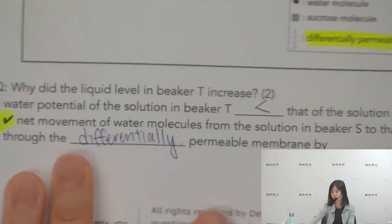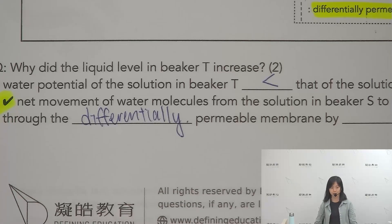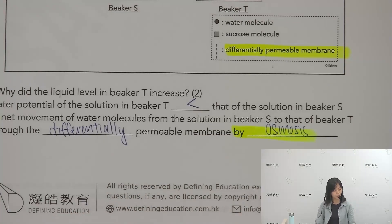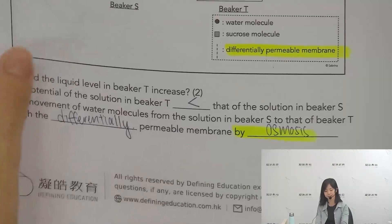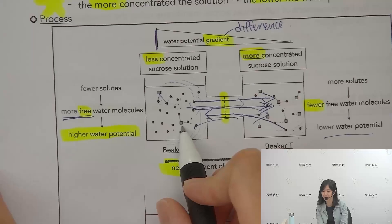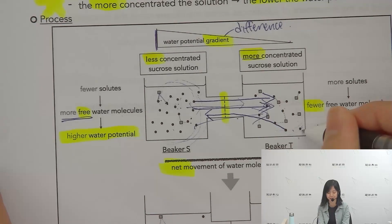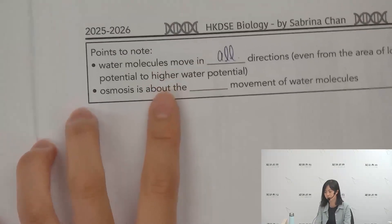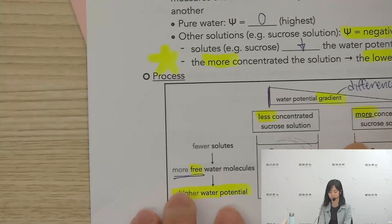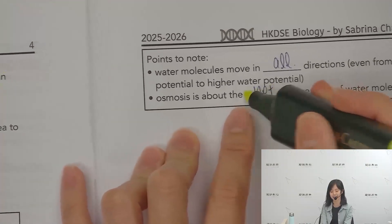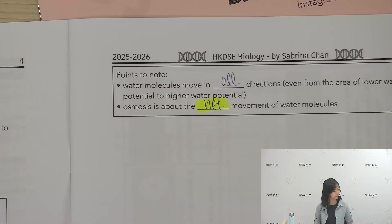Some students may use 'selectively permeable' — it depends on which book you use; both are correct. Then this process is called osmosis. Remember: even the water molecules from the lower water potential side (Beaker T) can still move back to Beaker S, so water moves in all directions. Osmosis refers to the net movement. You must use the word 'net' when describing osmosis.